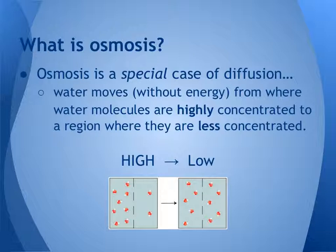Osmosis is a passive transport mechanism, but it deals specifically with water molecules — H2O molecules — and they will move from where they are highly concentrated to where they are less concentrated. We need to remember that passive transport, or any transport really, only deals with the concentration gradient that is set up for one particular type of molecule.